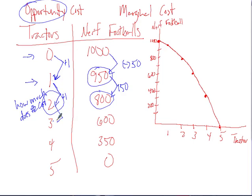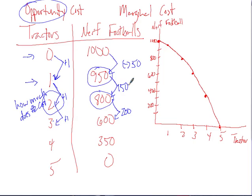Going from 2 to 3, what is the marginal cost of producing the third unit? It's in terms of opportunity cost, not dollars. Producing two tractors, we were producing 800 Nerf footballs, and now we can only produce 600. So in order to gain this third unit, we had to give up 200 units of Nerf footballs. So we gave up 50 for the first, 150 for the second, 200 for the third. We'll talk about why those numbers are increasing later.